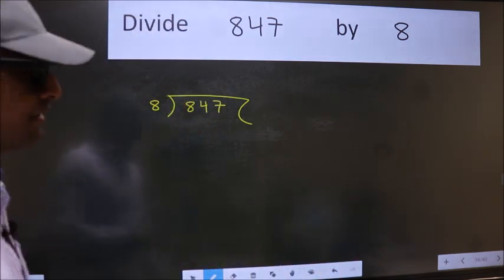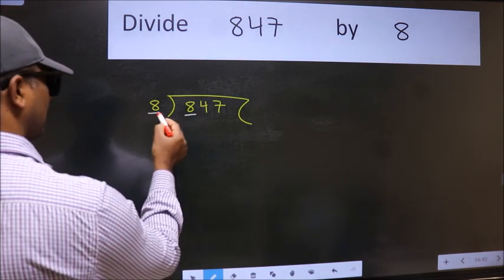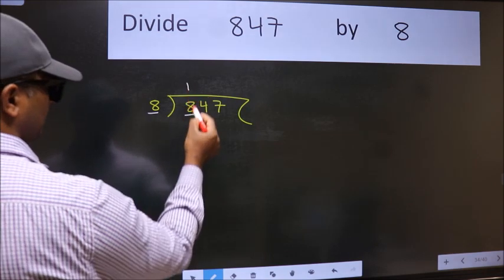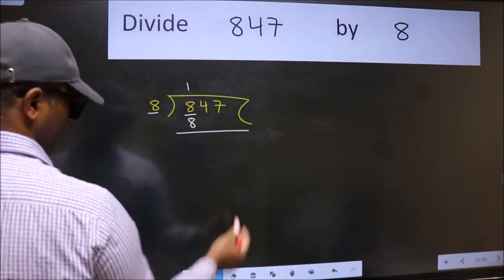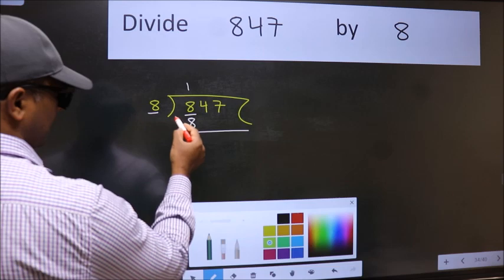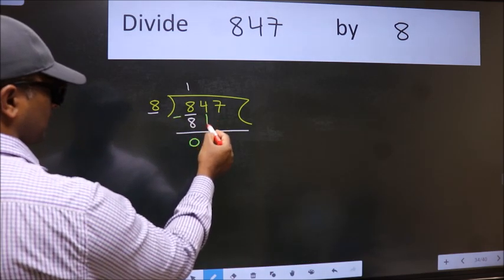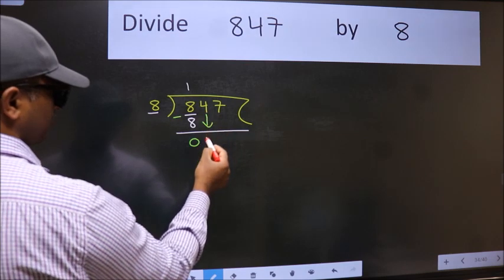Next. Here we have 8 and here 8. When do we get 8 in the 8 table? 8 once 8. Now we should subtract. We get 0. After this, bring down the beside number. So, 4 down.